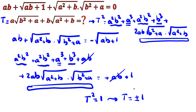Let's consider the sign of ab. If a and b are both positive, then every term here is positive — positive, positive, positive — so we reach a contradiction. Similarly, if both are at least zero, the expression is at least zero and at least one, giving zero equals zero: contradiction again.